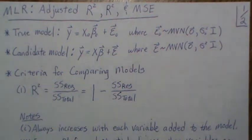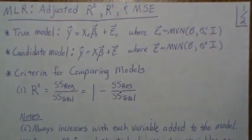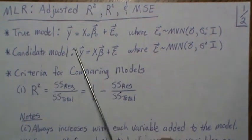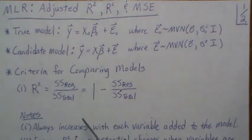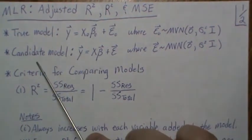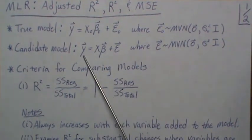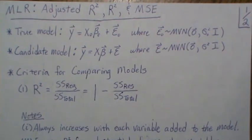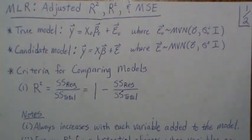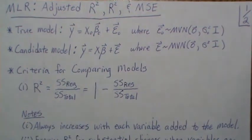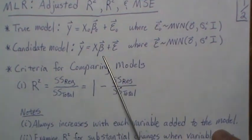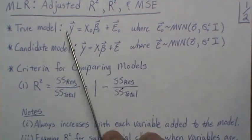In this video we're in the multiple linear regression setting and we're going to use the adjusted R squared, R squared, and the mean square error to compare candidate models to see which one is best. The setting is there's some true model out there and we'd love to find it, but we don't know what it is. We pick a candidate model to try to find the best model. The Y's are the same — they're generated from the true model — it's just the predictor variables that we don't know with certainty. We're going to look at three criteria for comparing models.